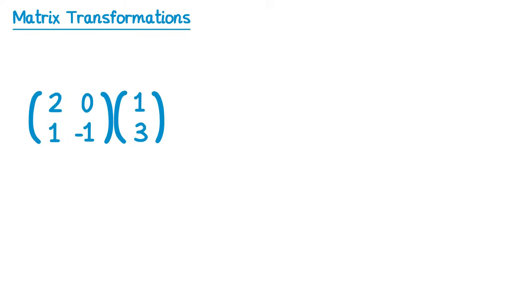We previously learned how to multiply matrices. For example, if we take a 2 by 2 matrix and a 2 by 1 matrix, we can multiply them. We do 2 0 and 1 3: 2 times 1 is 2, and 0 times 3 is 0, and 2 add 0 is just 2. Then we do 1 negative 1 with 1 3: 1 times 1 is 1, and negative 1 times 3 is negative 3, so 1 take 3 is negative 2.